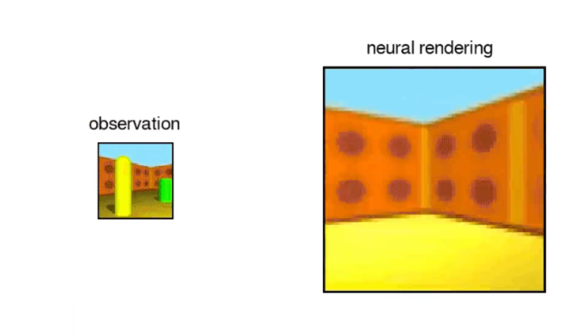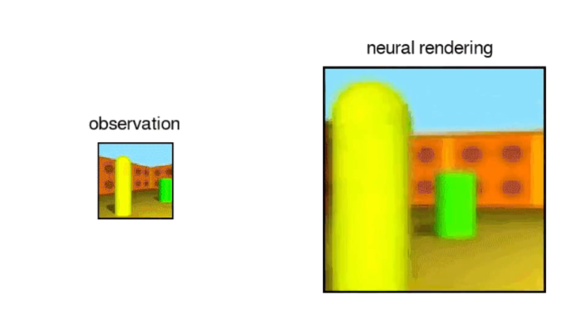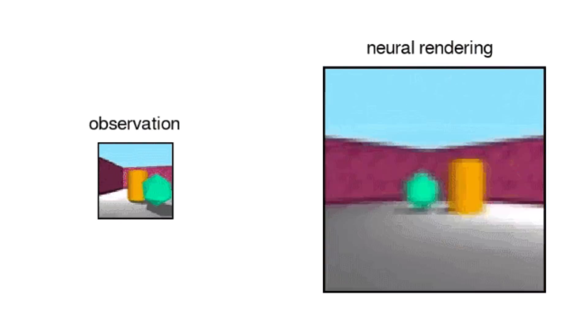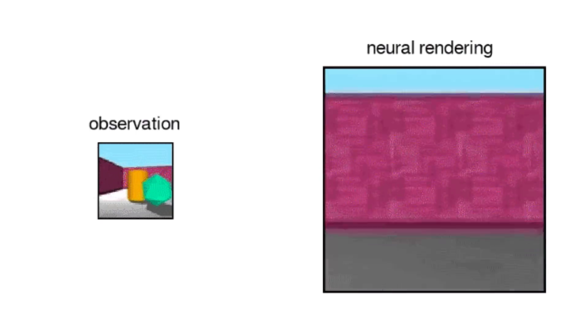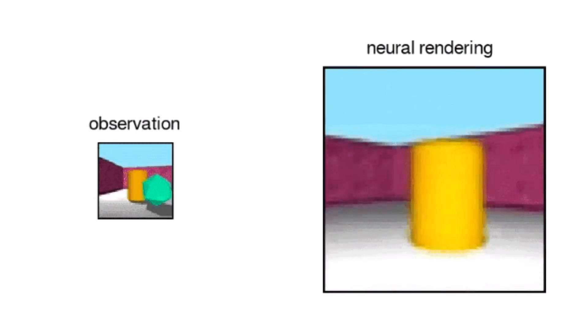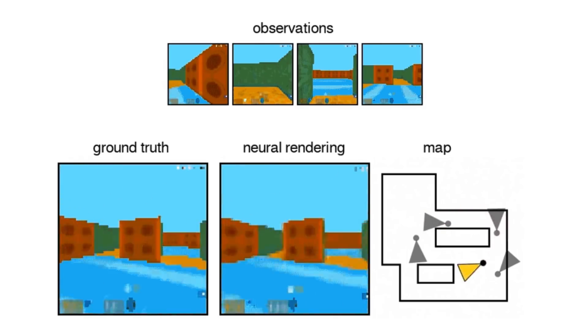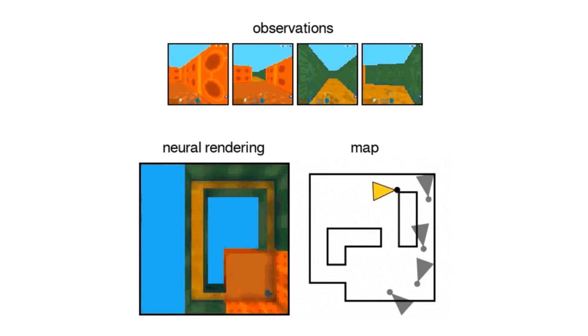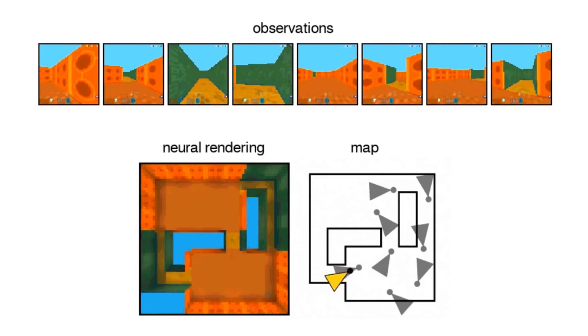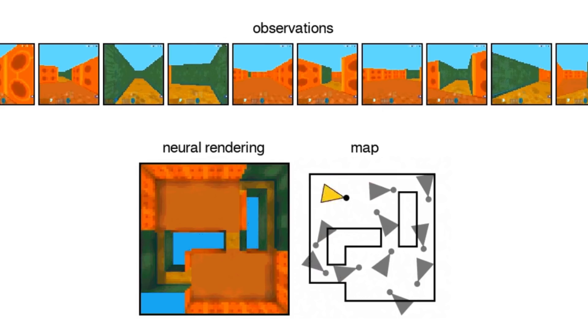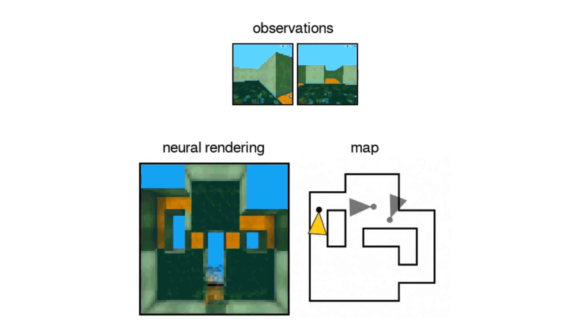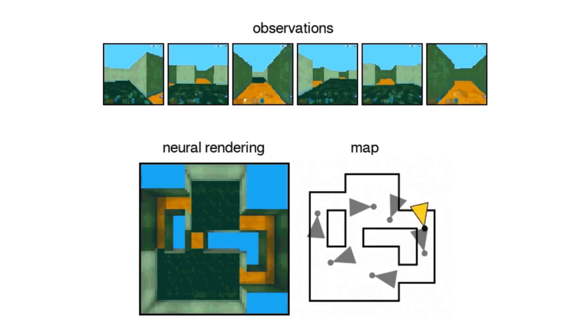They first trained it on a few simple 7x7 square maps with a few objects in them. Over time, it rapidly learned to predict what an entire map looked like. So they gave it a more complex maze instead, and over time, it learned how to represent that as well. At first, it was a bit uncertain of some parts of the map, but with more observations, and by more, I mean only 5 total, its uncertainty disappeared almost entirely.